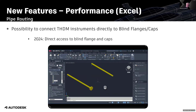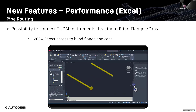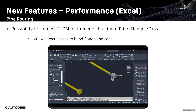Now in 2024, you can see here the blind flange and the cap at the end of a piece of pipe. Doing the same operation — adding the THDM instrument — you can see it will be aligned and I can connect it directly. No workaround needed.